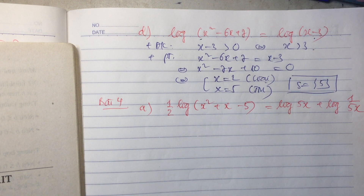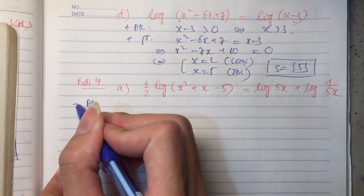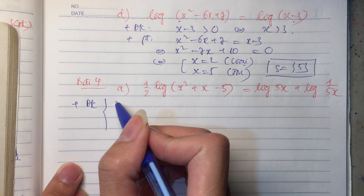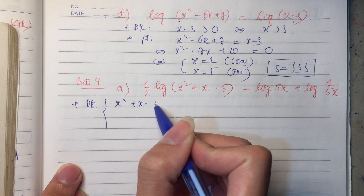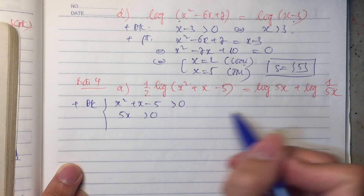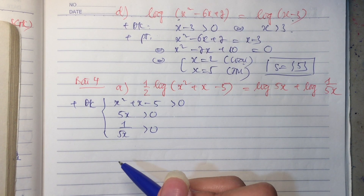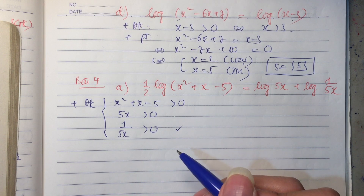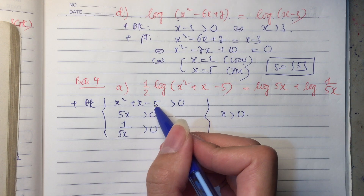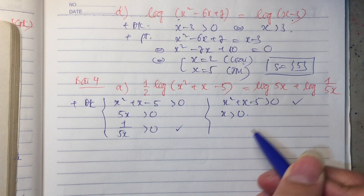Trong một bài tập mà có nhiều logarit như thế này thì em đặt điều kiện cho tất cả các logarit. Đó là: x bình phương cộng x trừ 5 lớn hơn 0; 5x lớn hơn 0; và 1 trên 5x cũng lớn hơn 0. Hai cái sau rất giống nhau: 5x dương thì chắc chắn 1 trên 5x cũng dương, nên cái này tương đương với x lớn hơn 0.